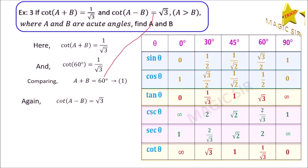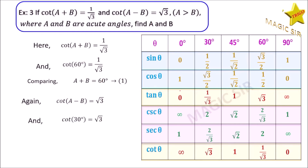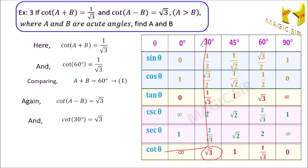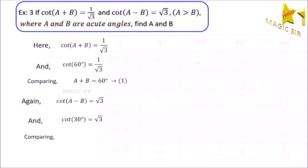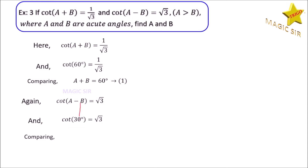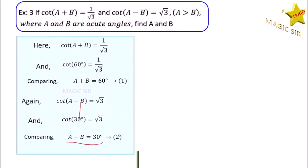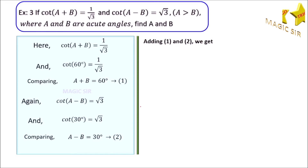Comparing, we get cot(A+B) equals cot 60 degrees, therefore A plus B is equal to 60 degrees. This is our first equation. Again, we have given that cot(A−B) is equal to root 3. Look at the Trigo tab — in the last row, cot theta is equal to root 3, and theta is equal to 30 degrees. So we write cot 30 degrees equals root 3.